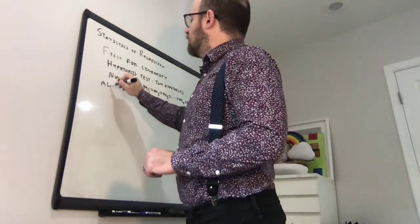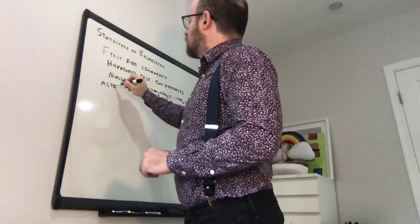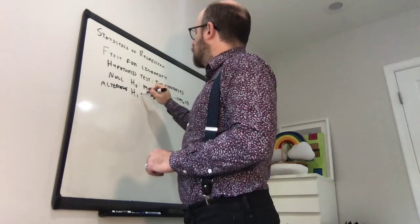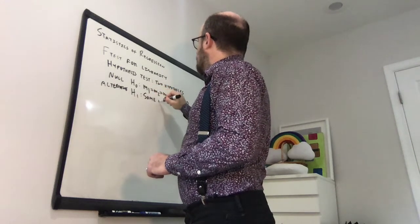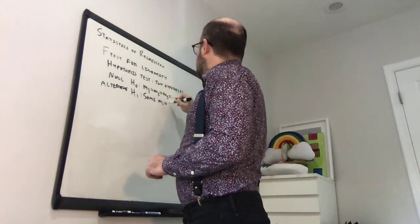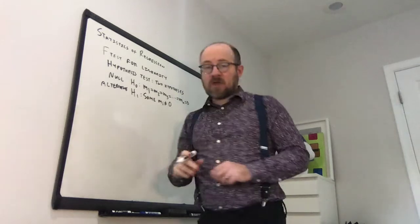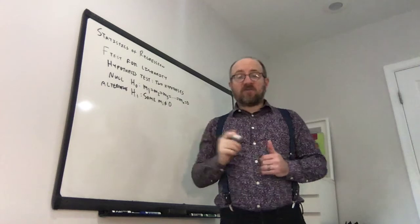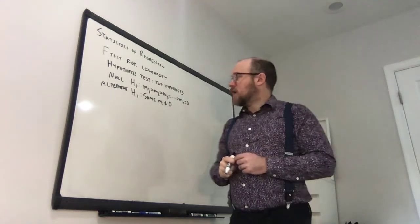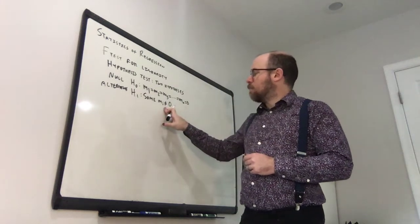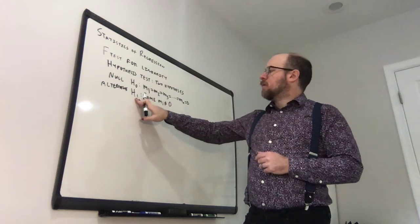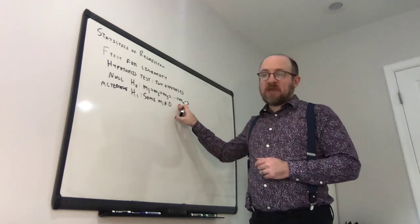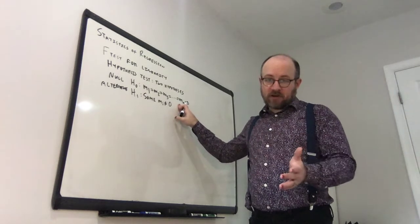The alternative hypothesis, denoted H1, is that some Mi is not equal to zero — meaning there's some linear dependence on at least one of the variables. So H1 says there is some linear dependence, while H0 says there is no linear dependence.